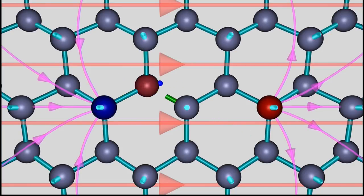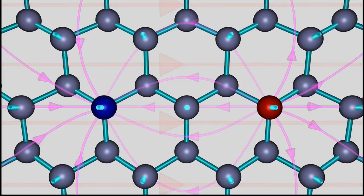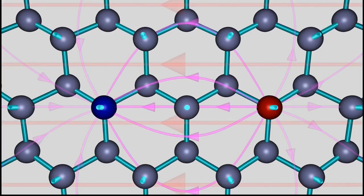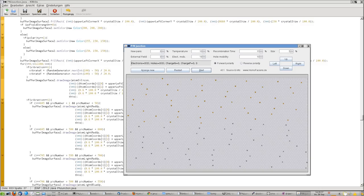In the first video about diodes, we discussed the mechanisms leading to the formation of a depletion layer near a PN junction on an atomic level. In this video, I would like to visualize those procedures at slightly larger dimensions. The animations used here were created with the help of a Java application which is available at the project page.